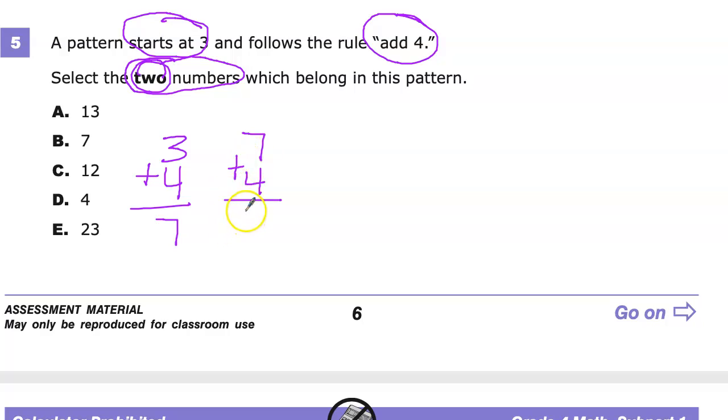Eleven plus four is fifteen. Fifteen plus four, five plus four is nine, bring down our ten, so nineteen. Nineteen plus four is twenty-three.